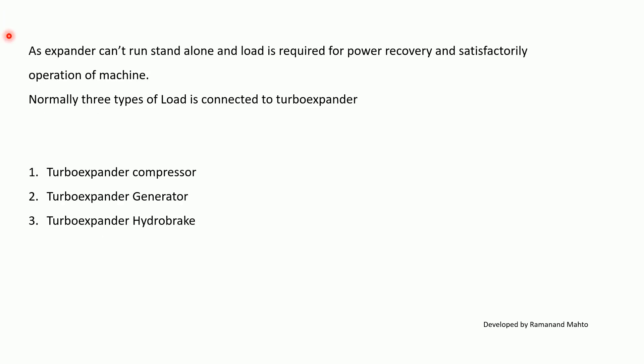The Turbo Expander is used in applications including natural gas processing, dew point control, LNG production, methane purification, ethylene plant, cold box refrigeration, hydrogen purification, natural gas pressure letdown power recovery, ammonia purification, geothermal energy binary cycle power recovery, carbon monoxide purification, gas-to-liquid processing, propane dehydration, propane dehydrogenation, and air separation. Since the expander cannot run standalone, a load is required. There are three types of loads: the Turbo Expander-Compressor arrangement, the Turbo Expander-Generator arrangement, and the Turbo Expander-Brake arrangement.